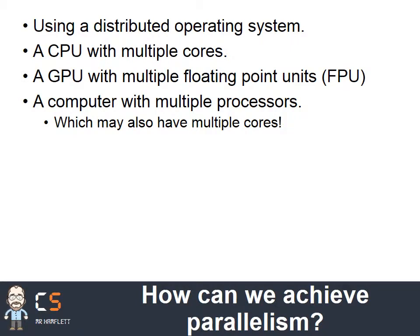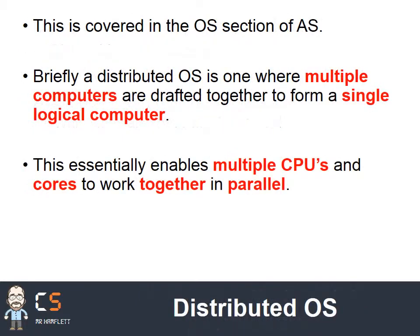So how can we achieve parallelism? There are four main ways: we can use a distributed operating system, a CPU with multiple cores which we've already looked at, a GPU with multiple cores or multiple floating point units, or a computer which has multiple processors which in turn may even have multiple cores as well.